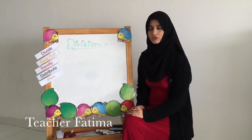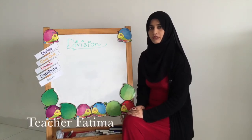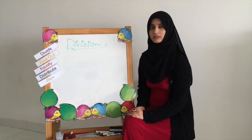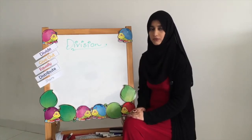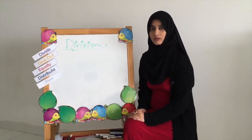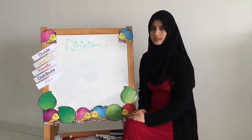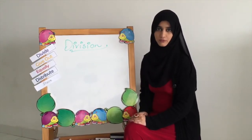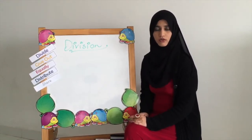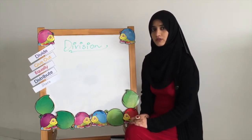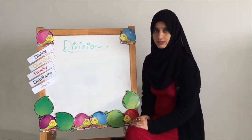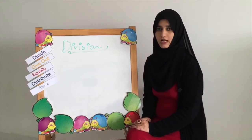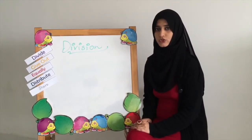All the questions we just solved, we were given a total number of things and we were given the number of sets we had to make. The answer was the set size. So we had a total number of things to distribute amongst people or boxes or groups, and we distributed equally, and the answer was the set size — how many each group got.